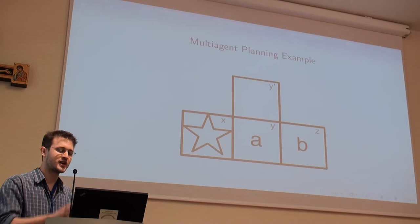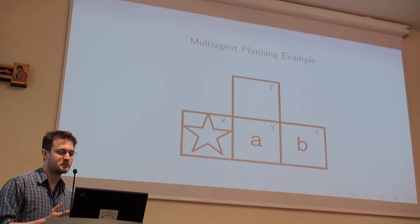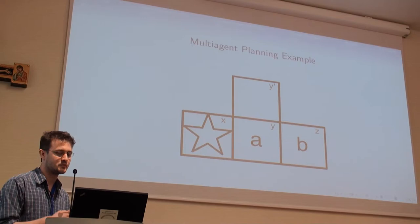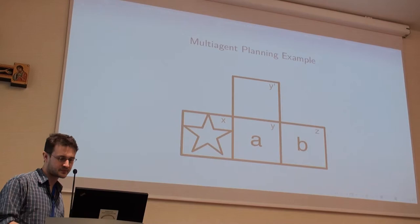Our approach is to first find a way to extract these agents from the problem, like the generalizers, and also to find a search algorithm that mimics the human approach — literally move A across to the goal area, and then if A's in the way, move it out of the way, and then solve for B separately.